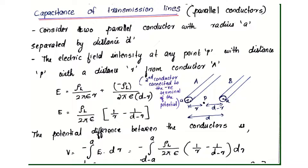The conductors have radius a and are separated by distance d. The electric field intensity at any point P at distance r from conductor A is given by E equals rho_l divided by 2 pi epsilon r, plus minus rho_l divided by 2 pi epsilon into d minus r.